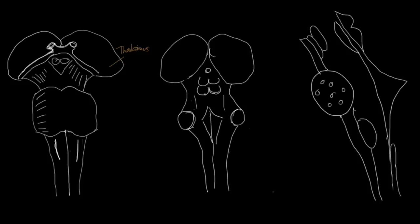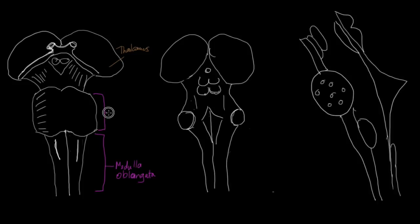The brainstem consists of three main parts. The lowest part of the stalk is the medulla oblongata, which for short we call the medulla. The next part, which is just rostral to it — remember, towards the tail end of the spinal cord is caudal, towards the top end is rostral — so rostral to the medulla oblongata we have the pons, and pons is Latin for bridge, basically the bridge between the two cerebellar hemispheres. And above that we have the midbrain.